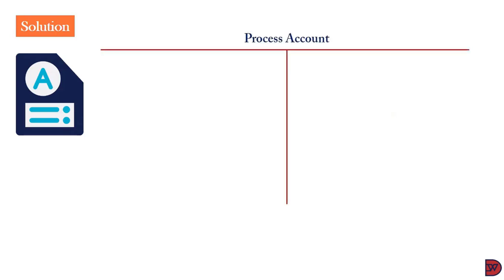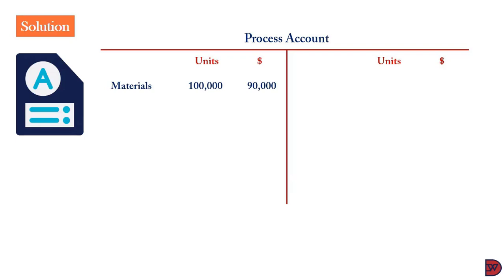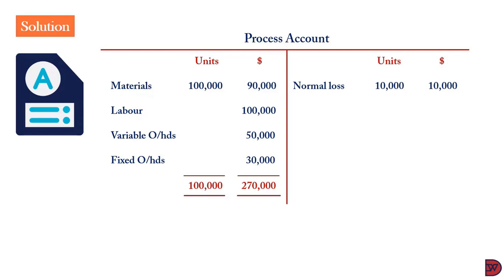When we move to the process account, we will bring the inputs to the debit side. Material of 100,000 units, $90,000. Labor of $100,000. Variable overheads of $50,000. Fixed overheads of $30,000. Then we close it: 100,000 units at a cost of $270,000.